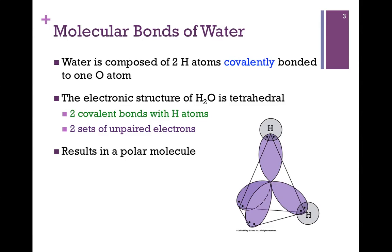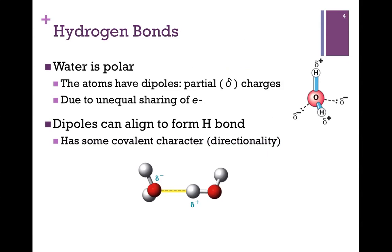It is the presence of these unpaired electrons that makes water a polar molecule. Recall what we mean by polar. It means that the atoms have dipoles, that is, partial charges, indicated by a lowercase delta symbol.